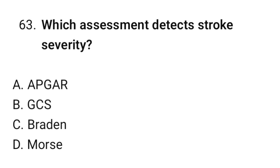Question number sixty-three: Which assessment detects stroke severity? The correct option is B: GCS (Glasgow Coma Scale).